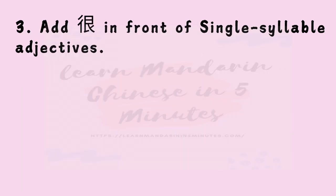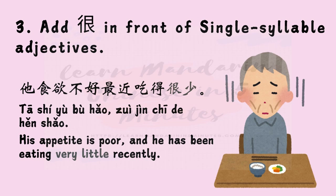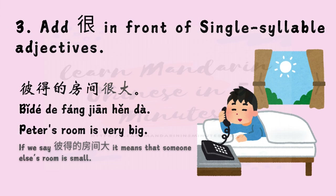Number three: add 很 in front of single-syllable adjectives. For example, 她食欲不好，最近吃得很少 — Her appetite is poor, and she has been eating very little recently. 皮德的房间很大 — Peter's room is very big. Note that if we say 皮德的房间大 without 很, it implies that someone else's room is small by comparison.